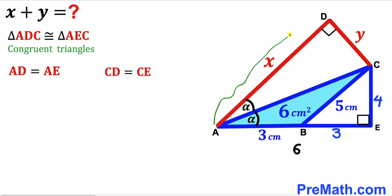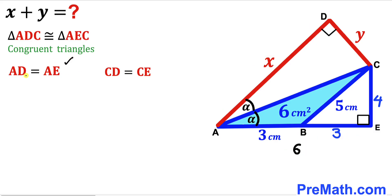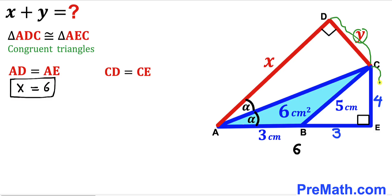AD is represented by x and AE equals 6, so x = 6 cm. Likewise, CD is represented by y and CE equals 4, so y = 4 cm.